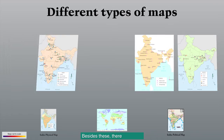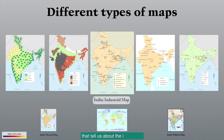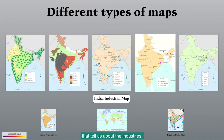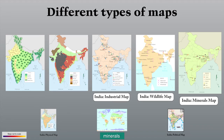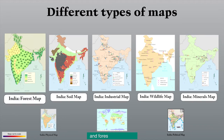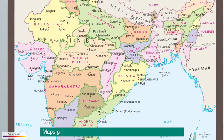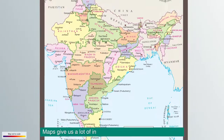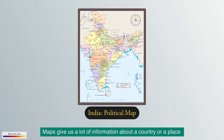Besides these, there are maps that tell us about the industries, wildlife, minerals, soil, and forests of a region. Maps give us a lot of information about a country or a place.